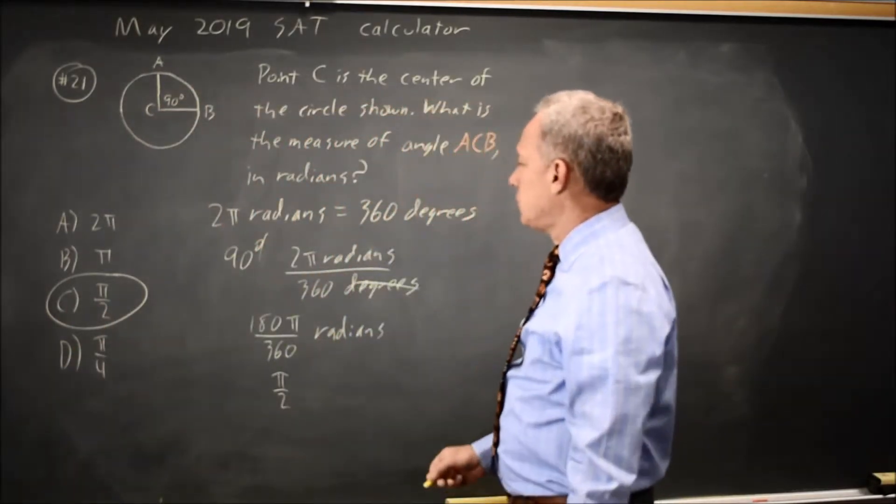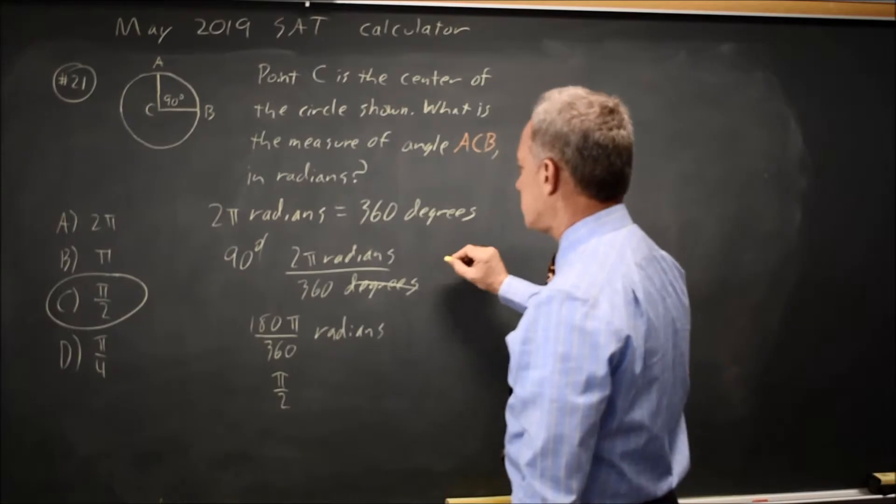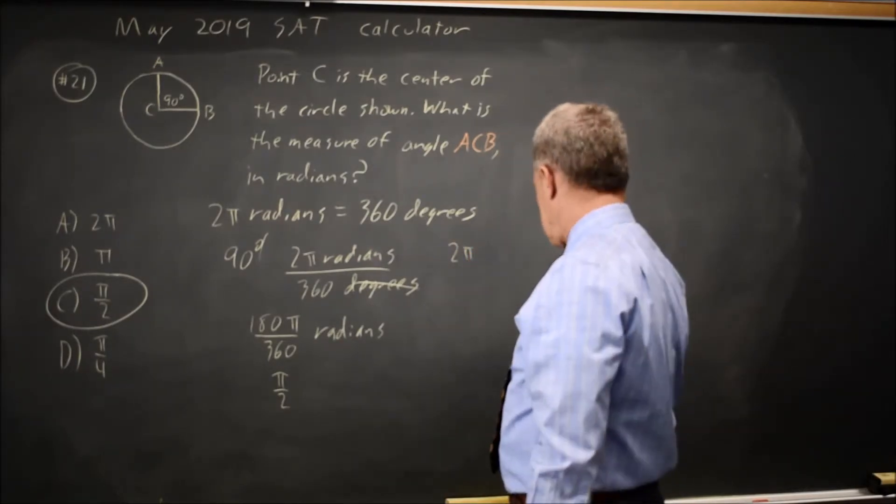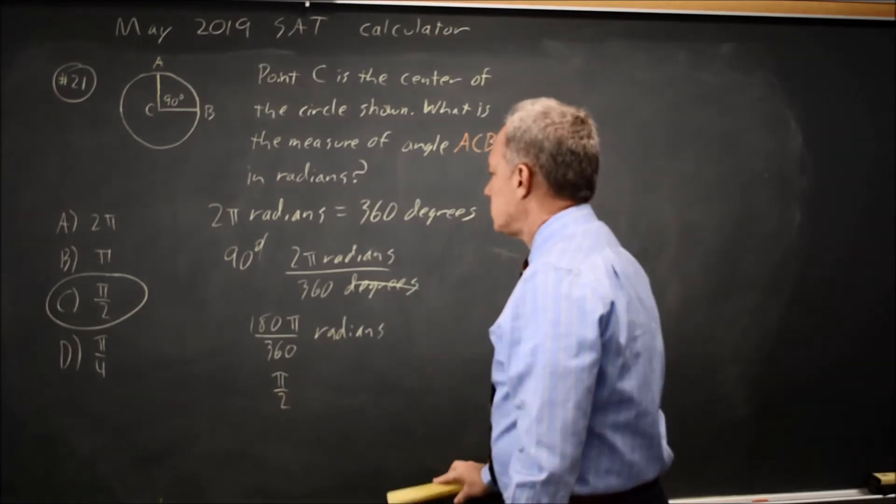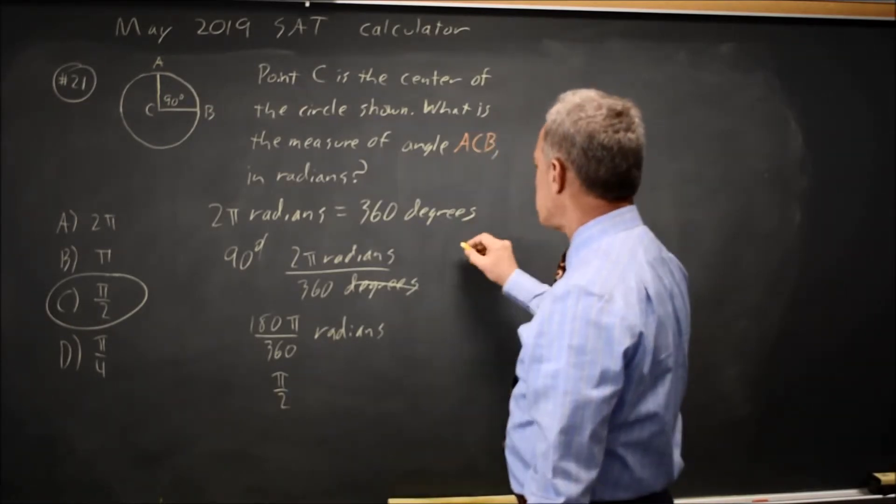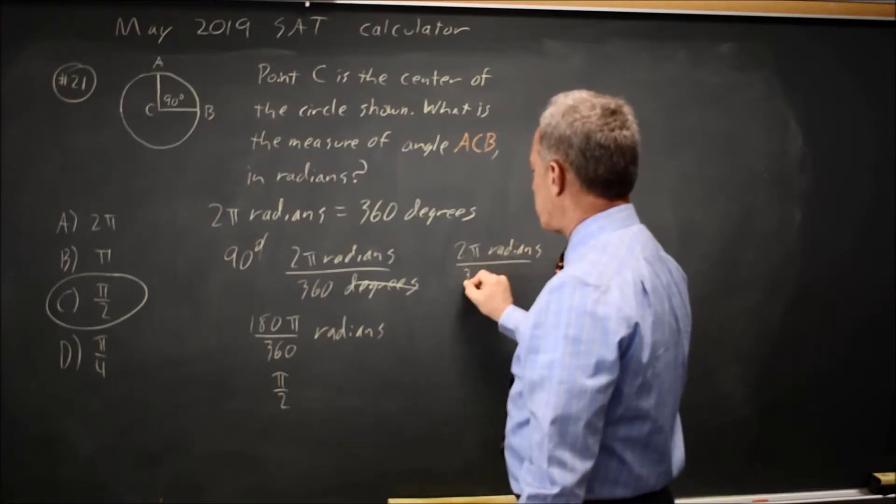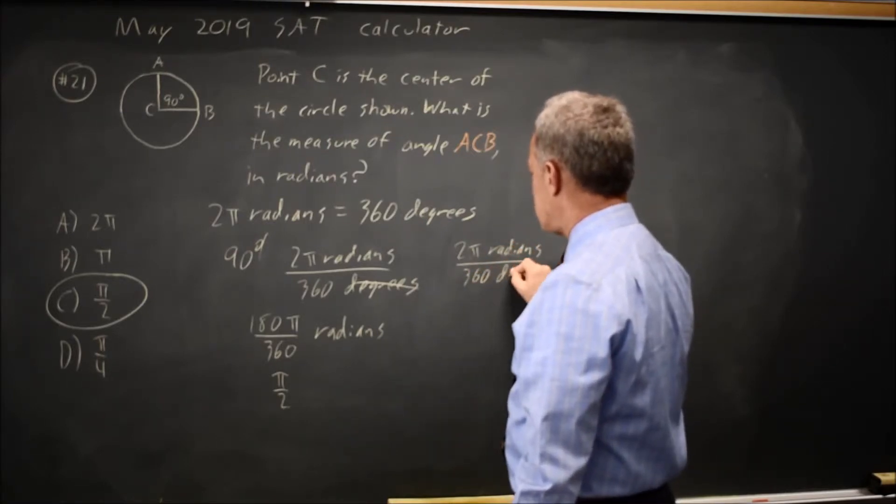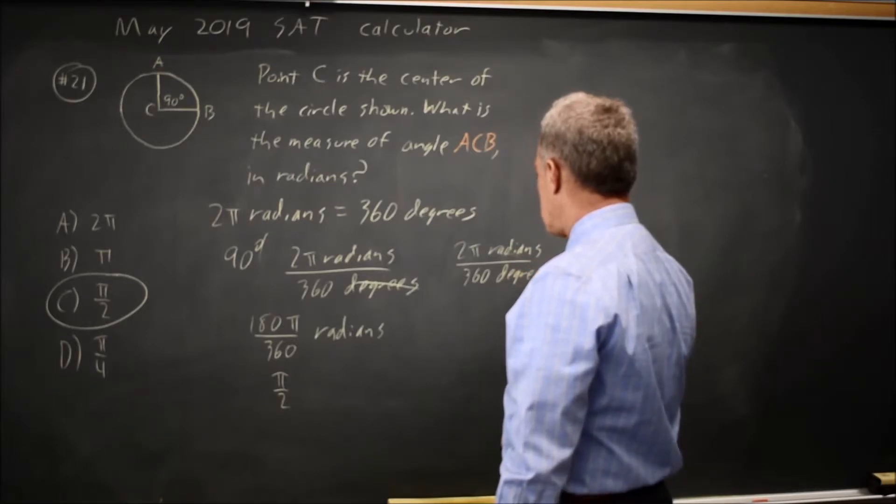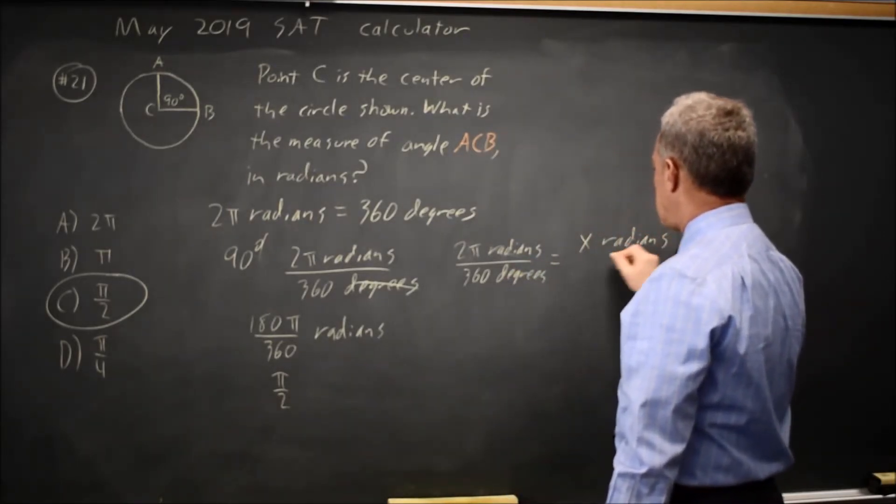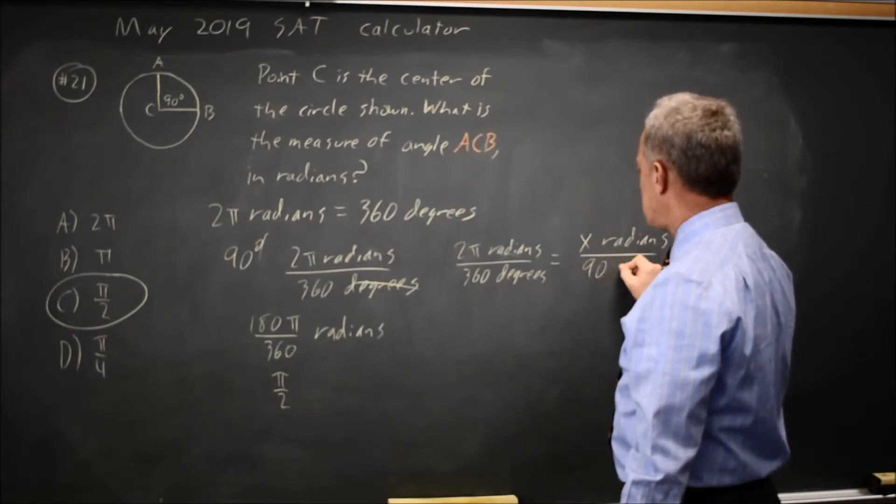Alternatively, you can write this as a ratio. 2 pi radians over 360 degrees equals x radians over 90 degrees.